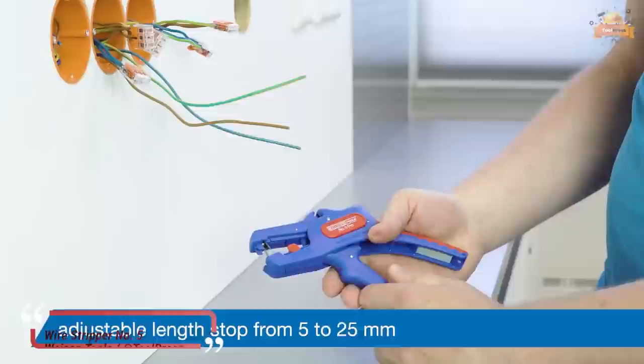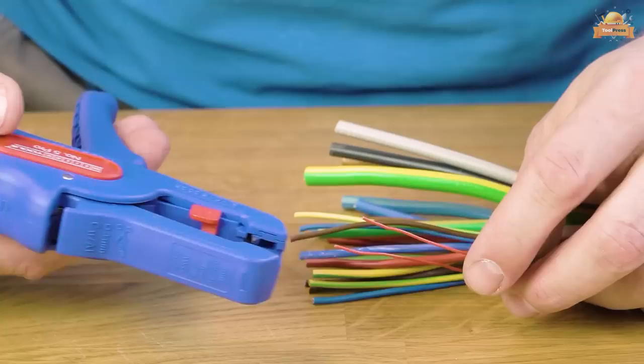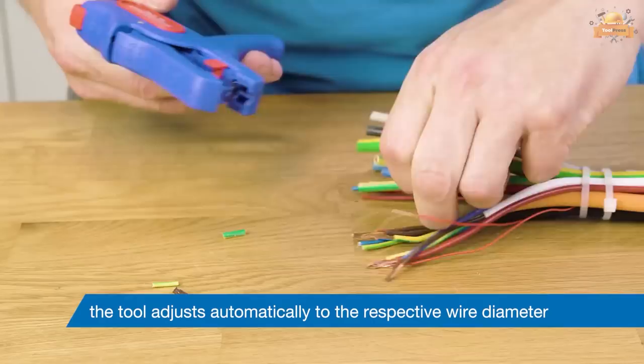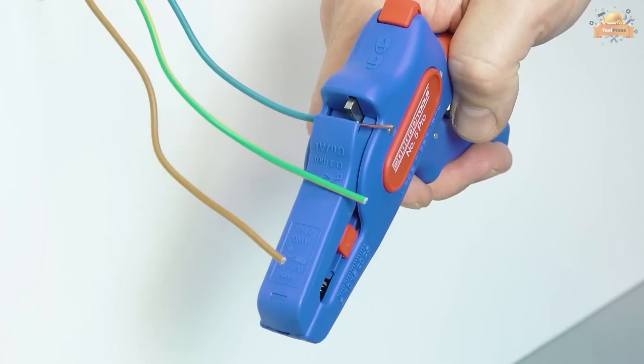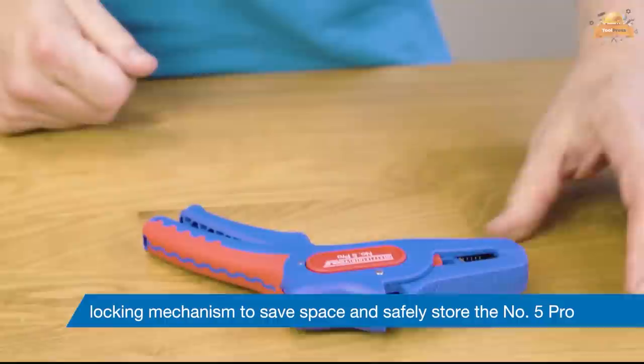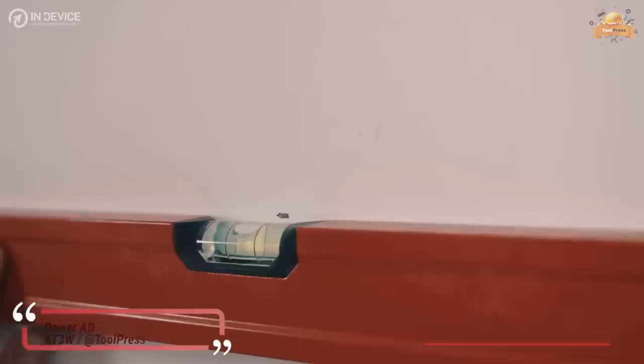This automatic wire stripper is user-friendly and easy to use. The adjustable length stop, 5 to 12 millimeters, allows cables to be cut to size. The wire stripper automatically adjusts to the wire diameter, allowing for fast and easy stripping without damaging conductors. Additionally, the wire stripper includes a side cutter that can cut cables up to a diameter of 3 millimeters. The tool is designed to be space-saving due to its locking mechanism, making it easy and safe to store. This wire stripper is 100% made in Germany and TUV/GS tested for work safety.